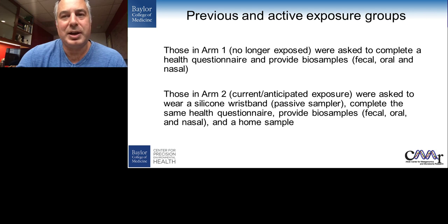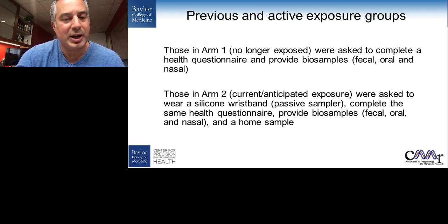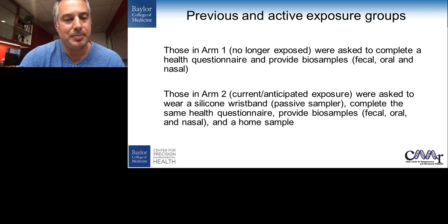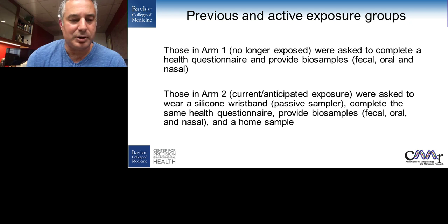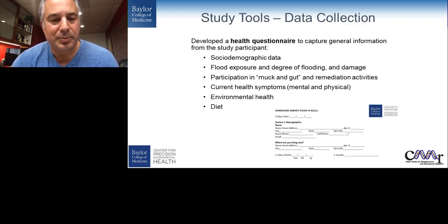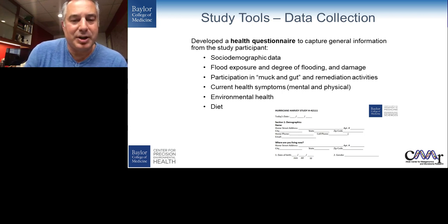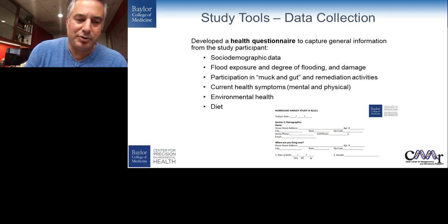We had two arms in terms of recruitment. Arm one involved people who were initially exposed to flood waters or flood damage but no longer exposed — started enrollment about 30 days out. These people were probably helping others but didn't have home damage themselves. They completed a health questionnaire and provided samples for microbiome studies — fecal samples, oral saliva samples, and a nasal swab. Arm two involved those under more long-term exposure, who provided the same types of samples but were also given a silicone wristband from Dr. Anderson's group at Oregon State.